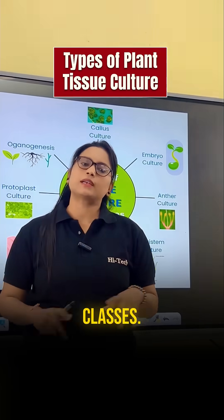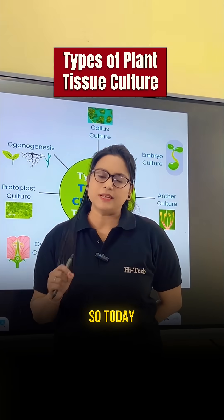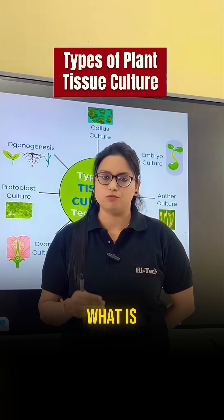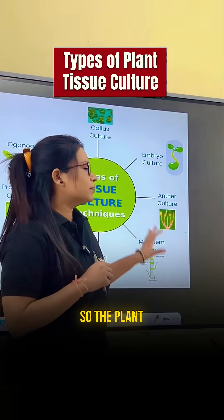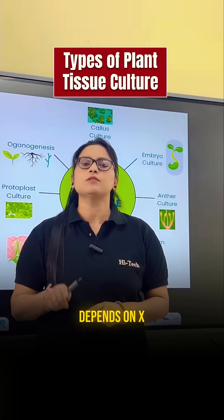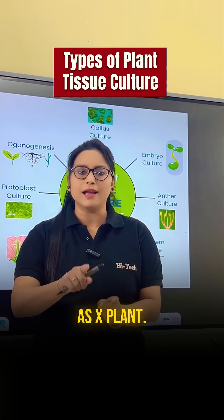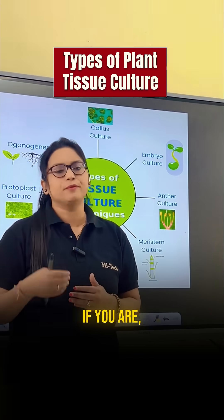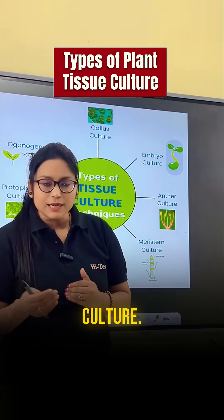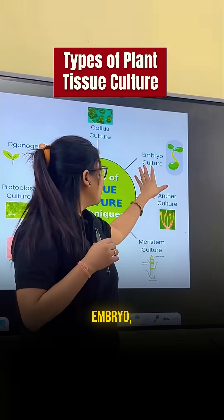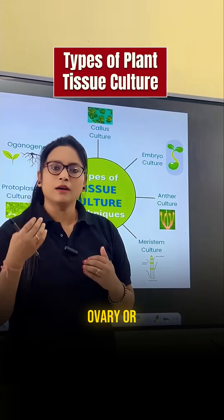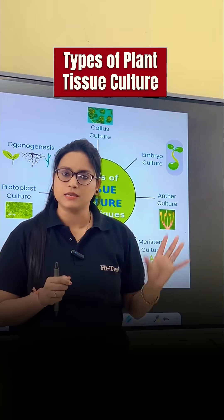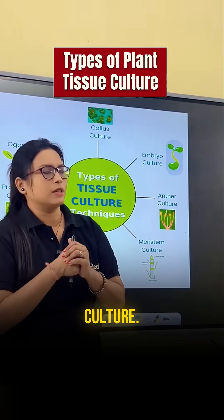Welcome back to the classes. Today we'll discuss the types of plant tissue culture. The type of plant tissue culture depends on the explant you are using. For example, if you are using the callus, it comes under callus culture. If you are using the embryo, anther, ovary, or protoplast, the type depends upon the explant.